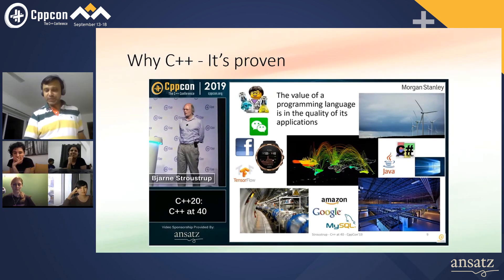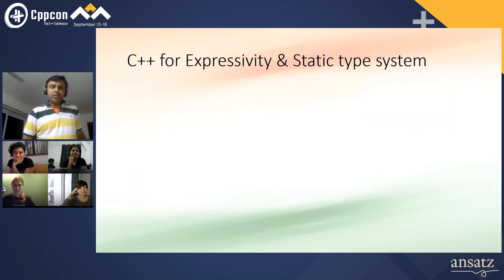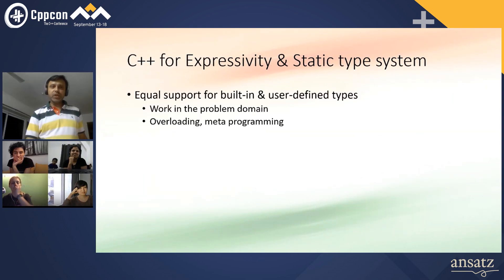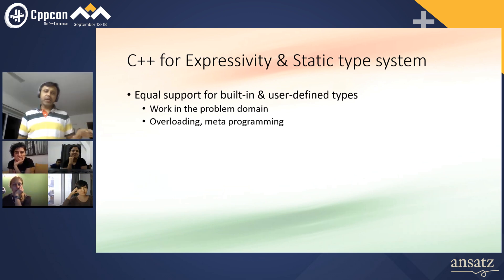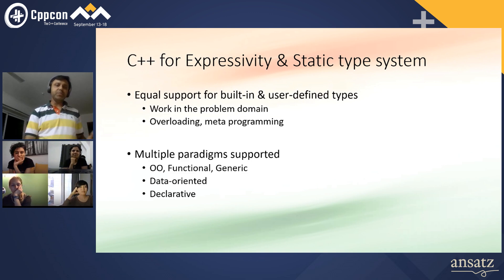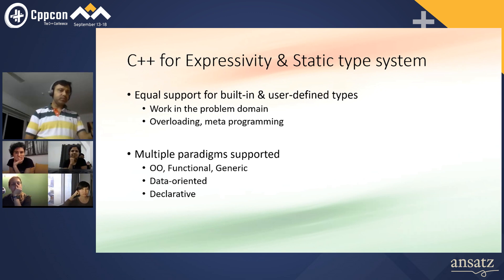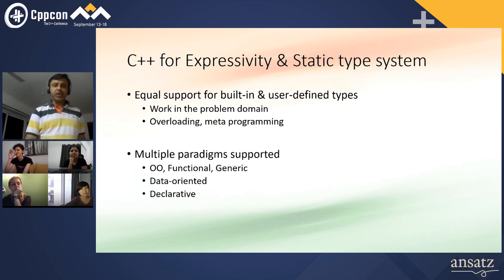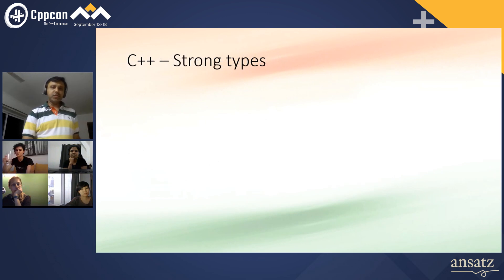C++ for expressivity and a static type system: equal support for built-in types and user-defined types — you can use them just like you use an int. Overloading and metaprogramming make this possible. You don't have to be enforced by the language into a particular paradigm; you take your pick. Want a data-oriented or declarative style? You can go for it — no restriction.